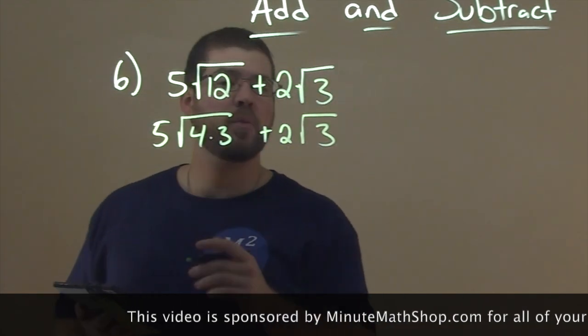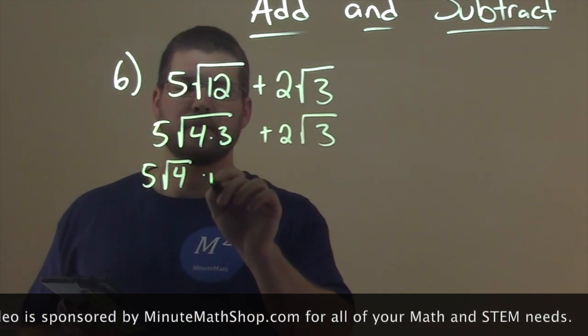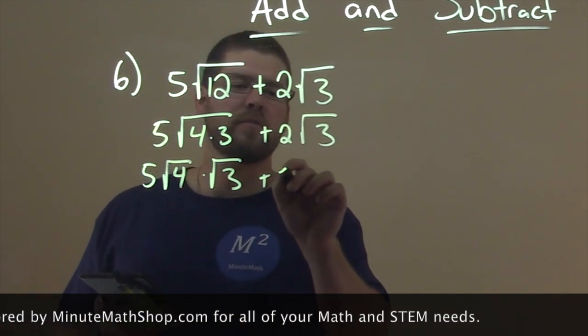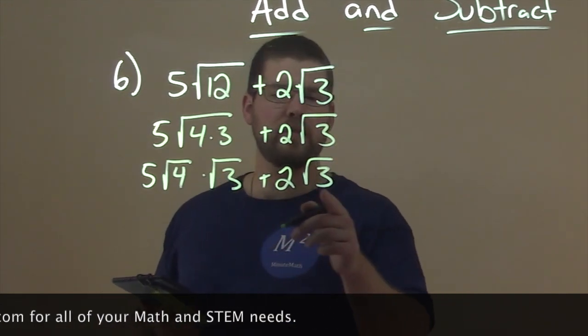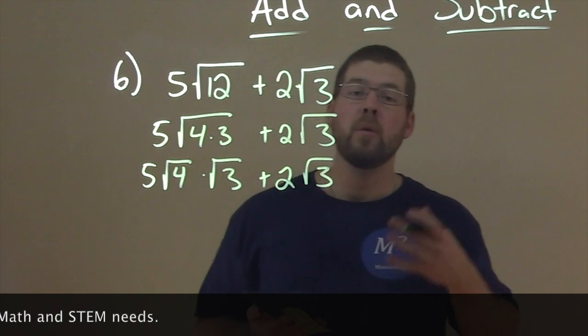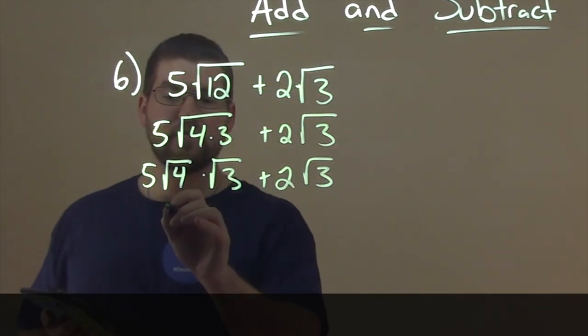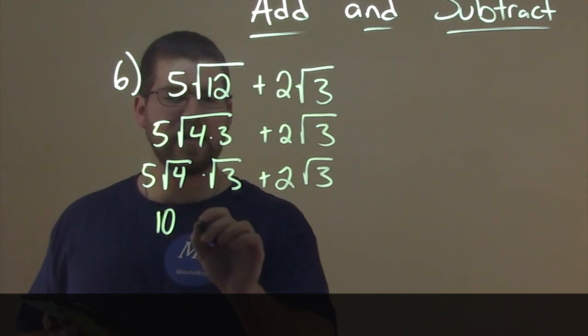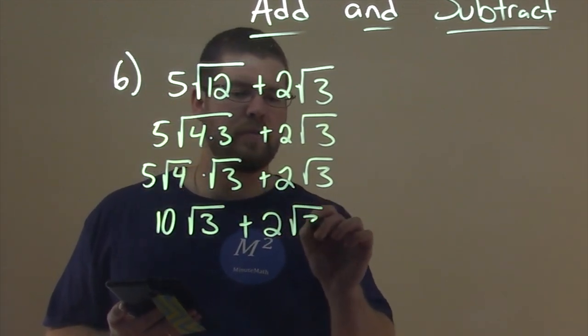And we can take the square root of each one individually: 5 square root of 4 times the square root of 3 plus 2 square root of 3. So now I see my square root of 3's here, but we still have that square root of 4. Well, luckily for us, square root of 4 is 2, and 5 times 2 is 10. So we have 10 square root of 3 plus 2 square root of 3.